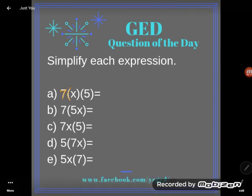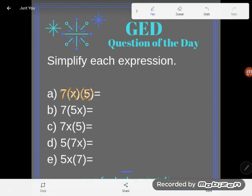This expression says 7 times x times 5. I'm asking you to multiply together some numbers and some variables, some unknown numbers. The x is an unknown number.